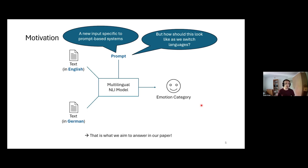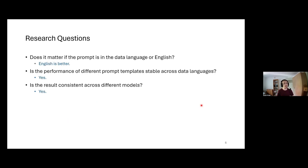We focus specifically on prompting using natural language inference-based models. We investigate three questions. First: should the prompt used to classify text in non-English languages be in English, or in the data language — the language of the input? There are justifications for both: most general pre-trained NLI models have a lot of English in their training corpus, so we would expect English to perform better, but the model might also exploit synergies if the prompt language and data language match.